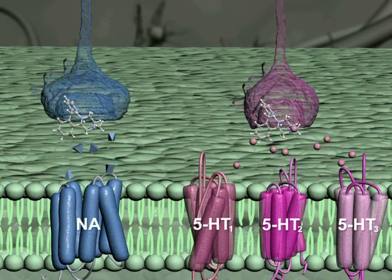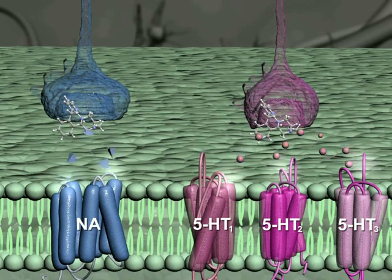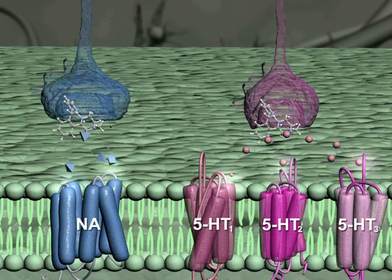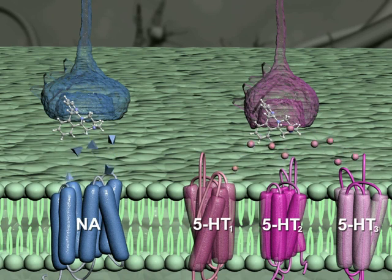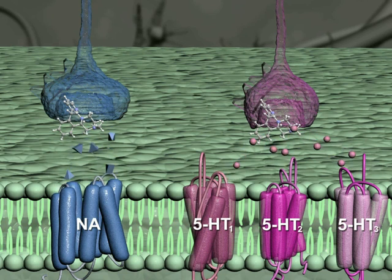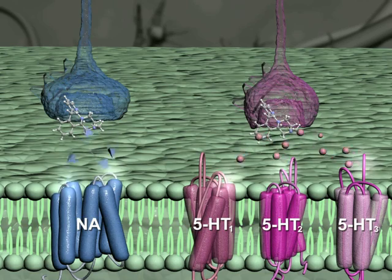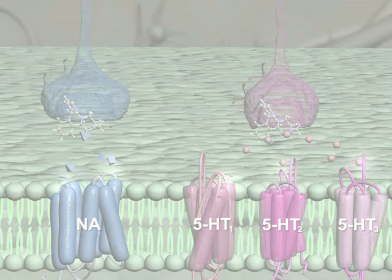Serotonin noradrenaline reuptake inhibitors (SNRIs) block the reuptake of both NA and serotonin, and also increase the amount of NA and serotonin available to their post-synaptic receptors.